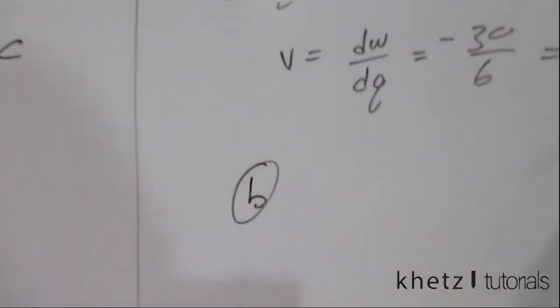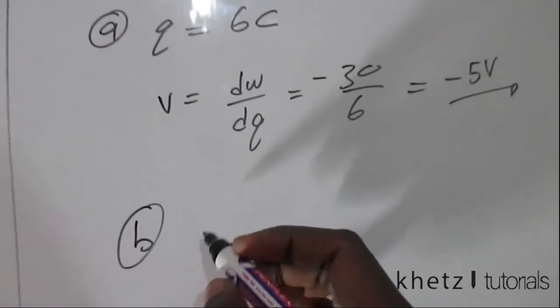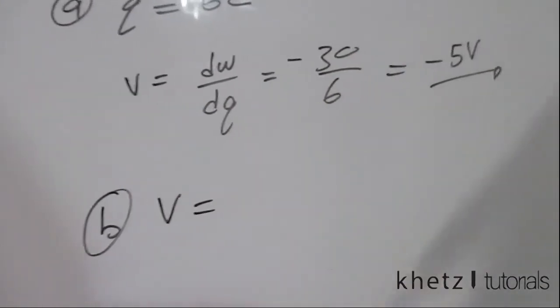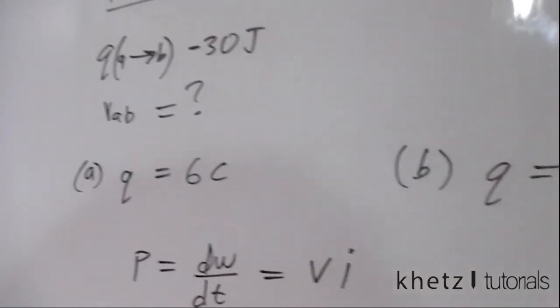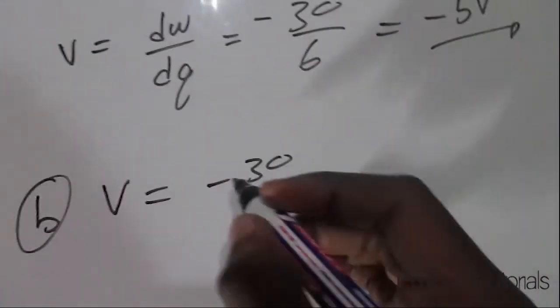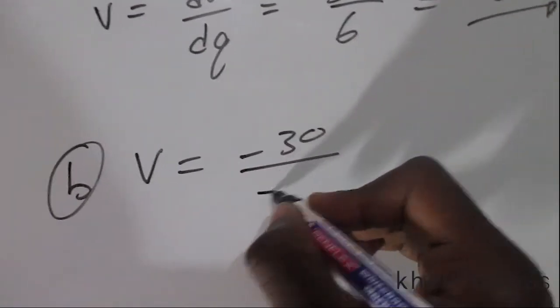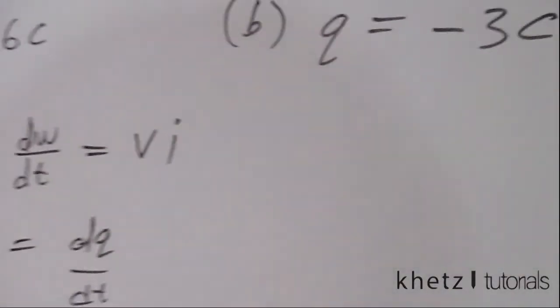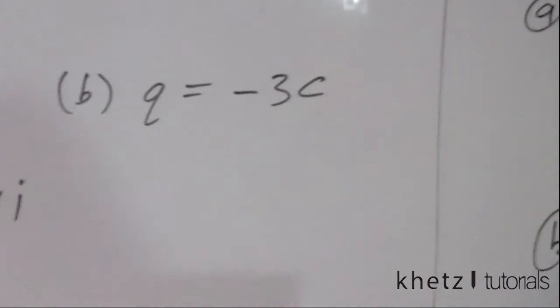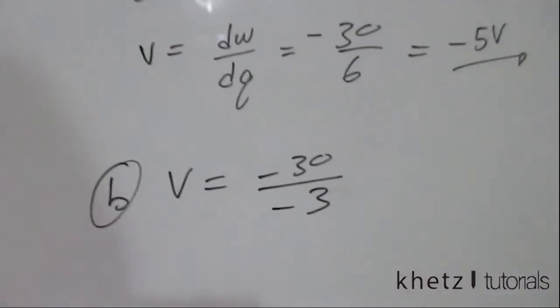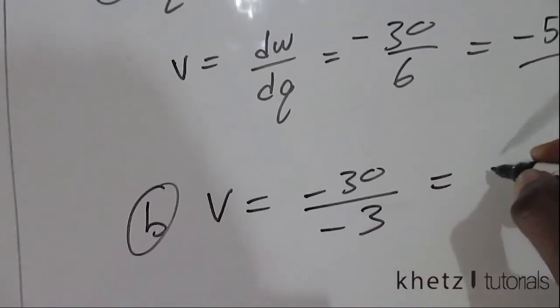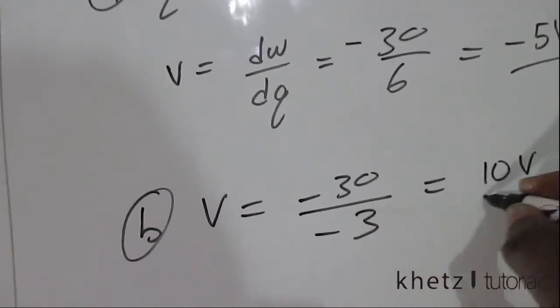And then part b. The same substitution applies, so V equals negative 30, which is the same. Now the only thing that is different is the charge, given as negative 3 coulombs in part b. So the voltage is therefore 10 volts.